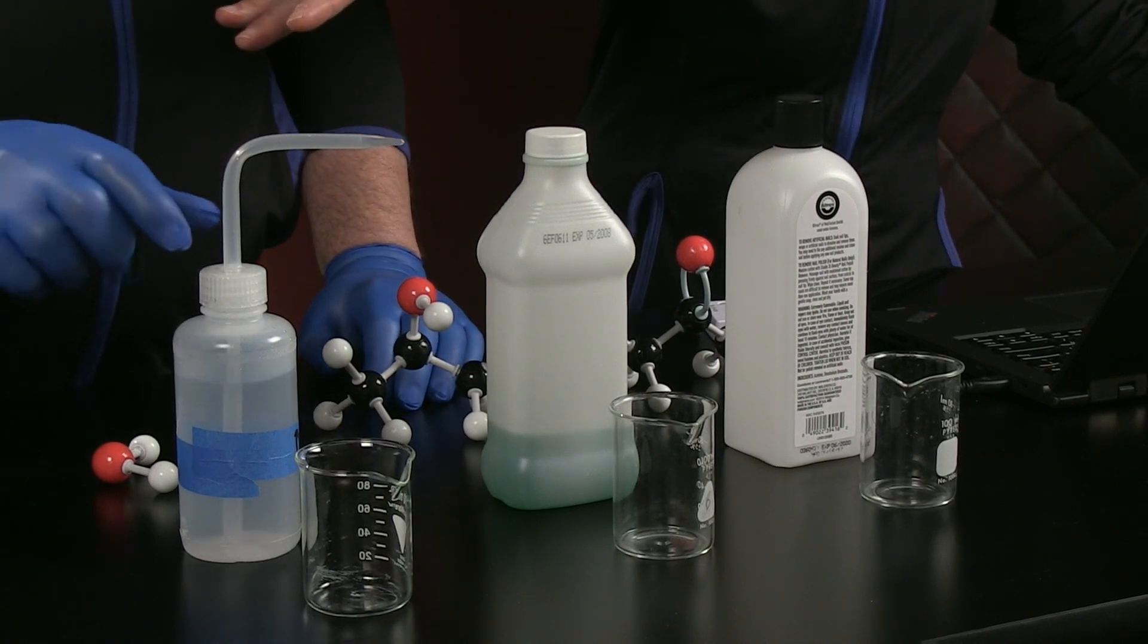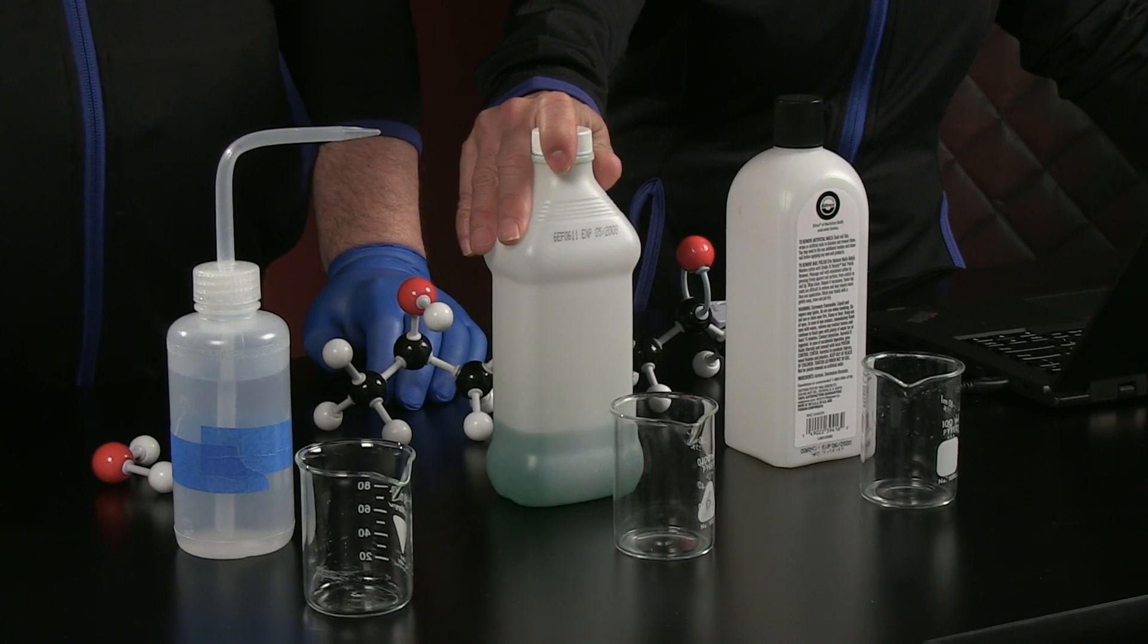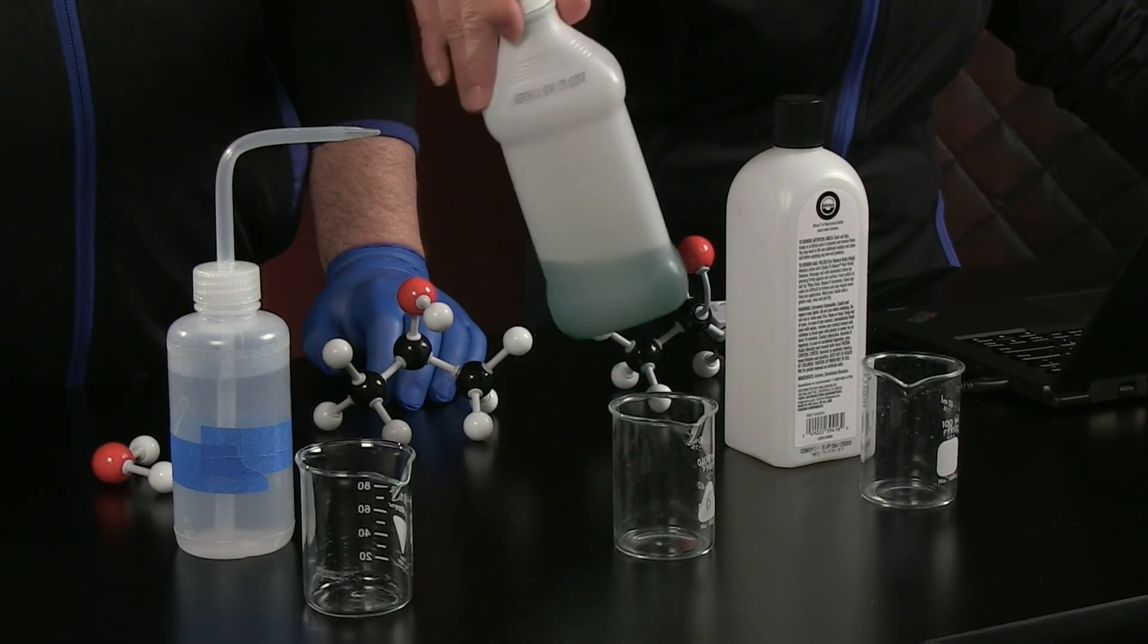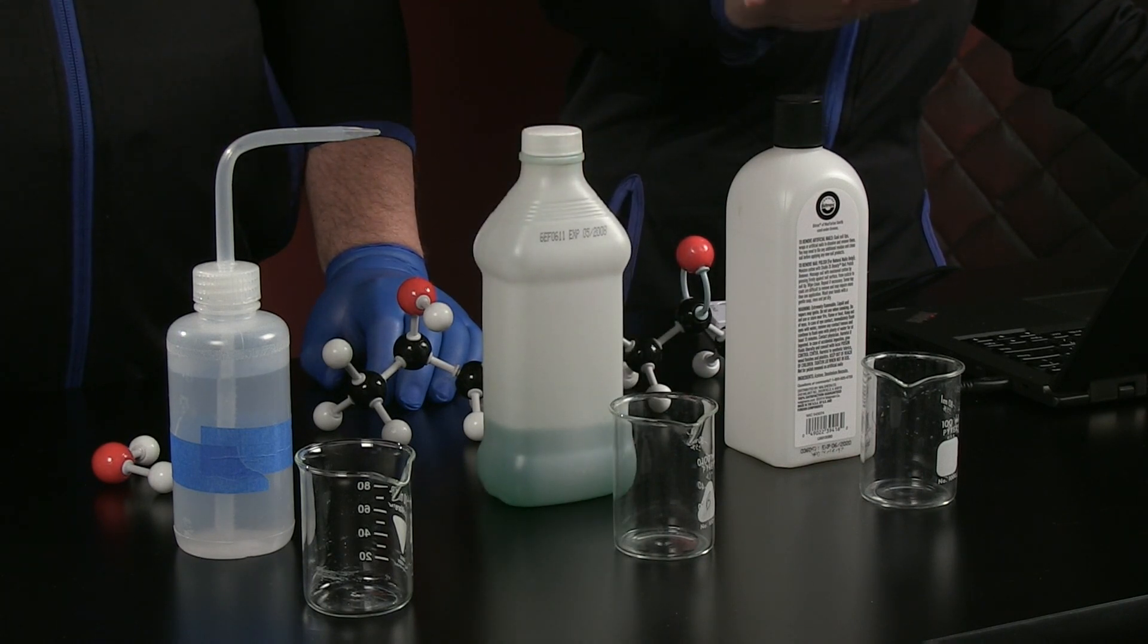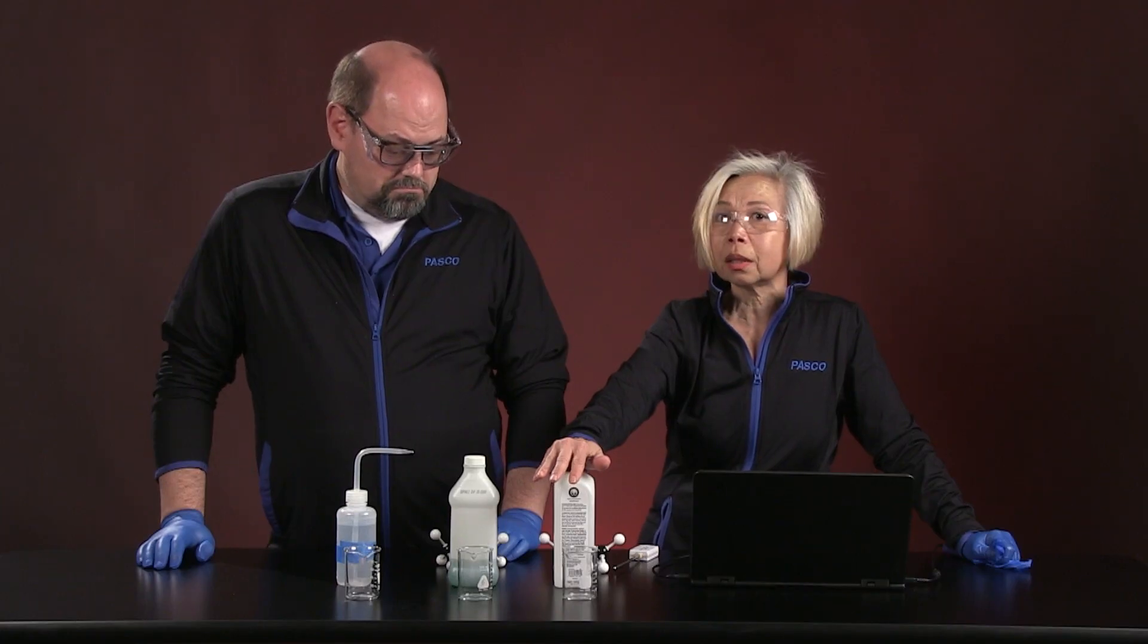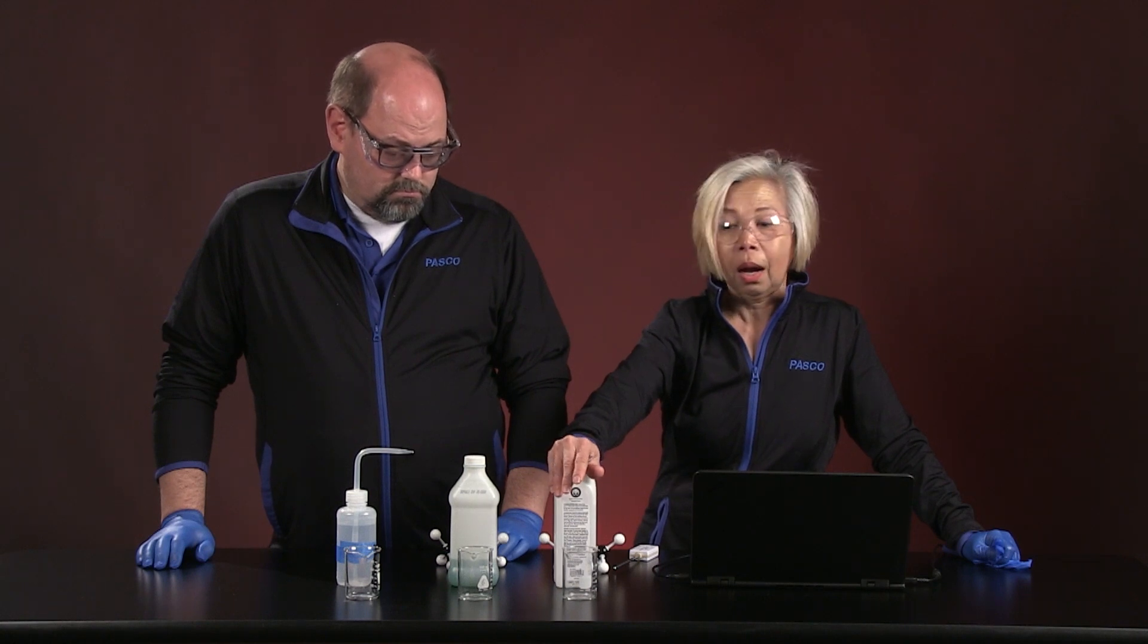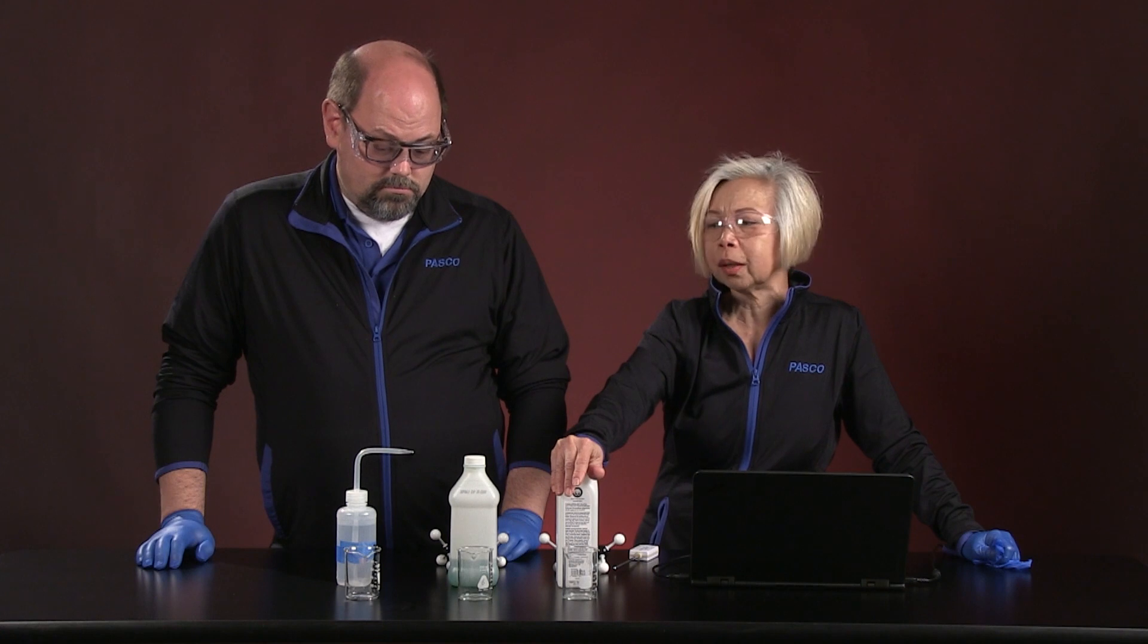We're actually going to be studying three different liquids. One of them is plain old water. Then we're going to move into 91% isopropanol, isopropyl alcohol. Very easy to get. This is something that comes from your local drugstore. And then finally, we are going to be using acetone. Acetone is basically nail polish remover. Again, something very easy for everybody to acquire. I would encourage you to actually try these experiments at home because they're awfully fun.